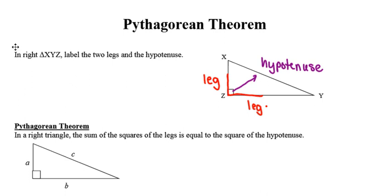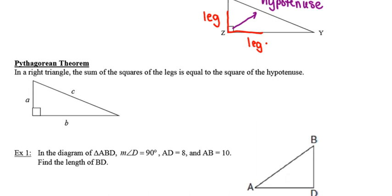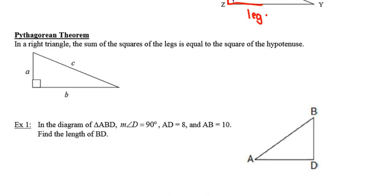Again, recall from your middle school time that the Pythagorean theorem says that in a right triangle the sum of the squares of the two legs is equal to the square of the hypotenuse. Now sometimes we'll shorten this to say a squared plus b squared equals c squared.